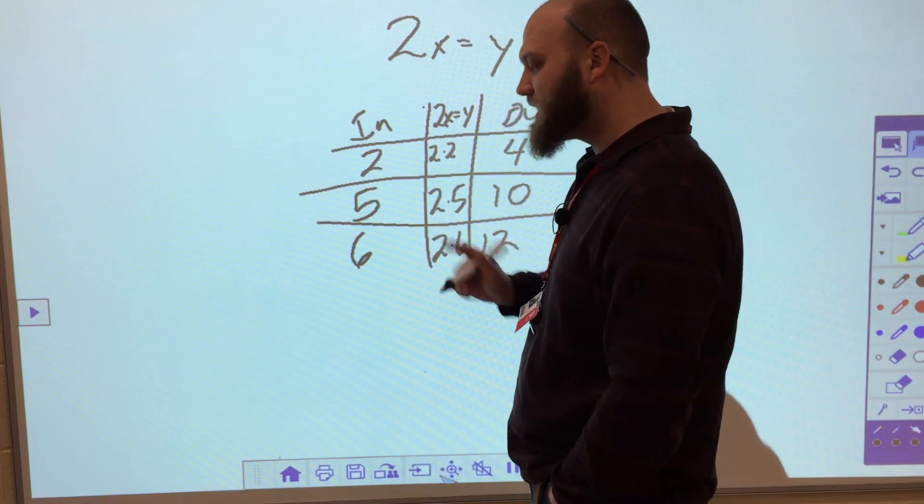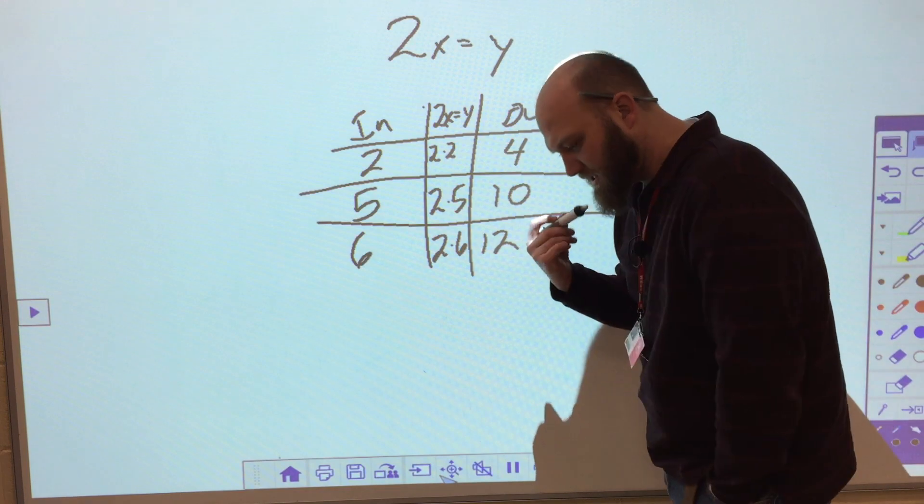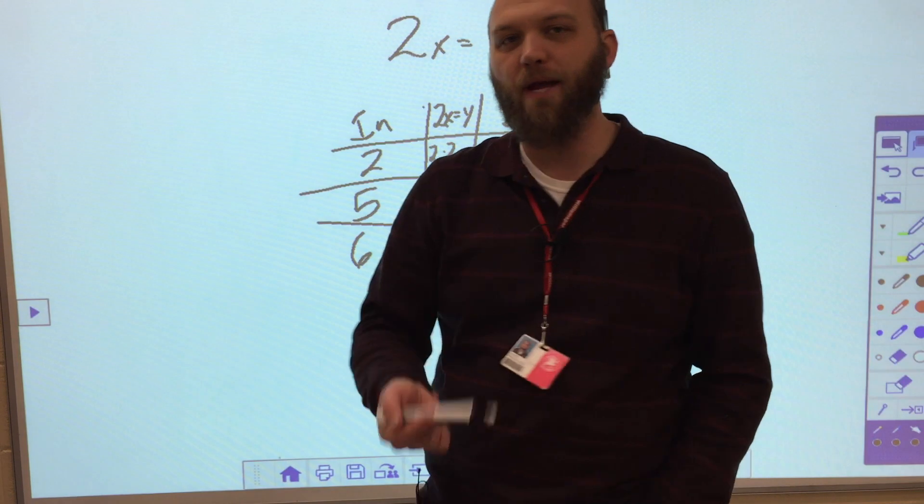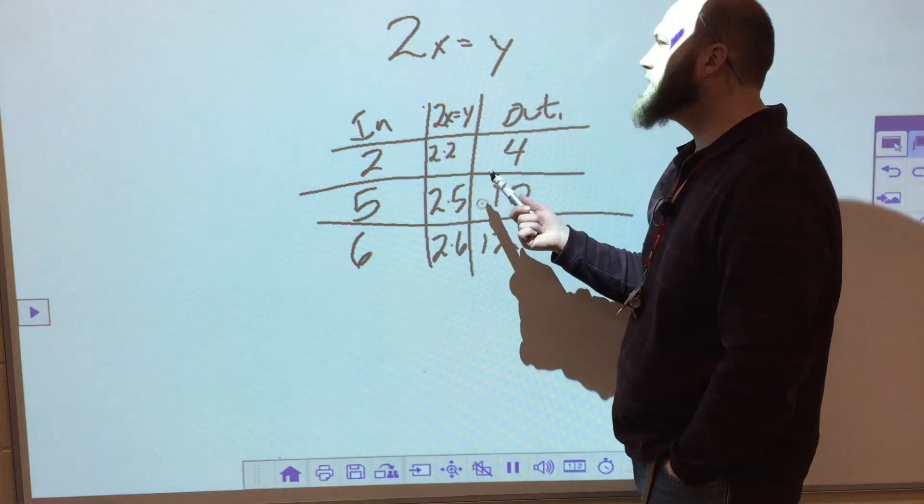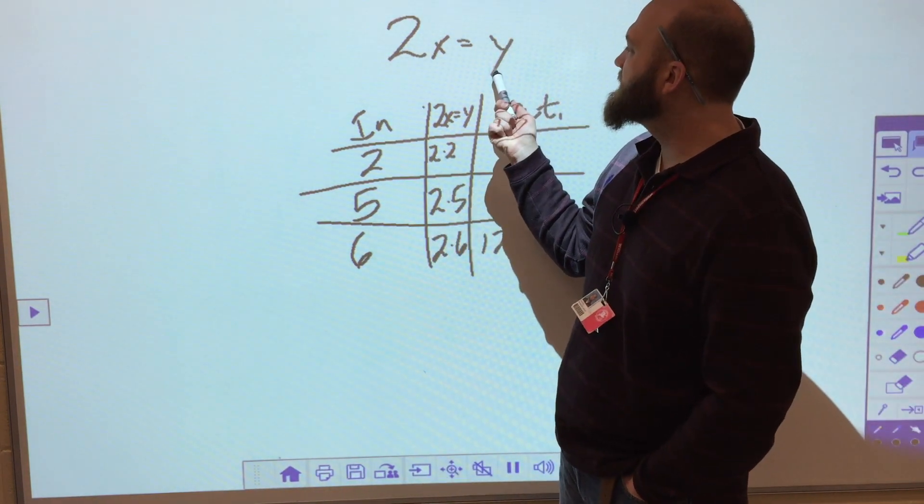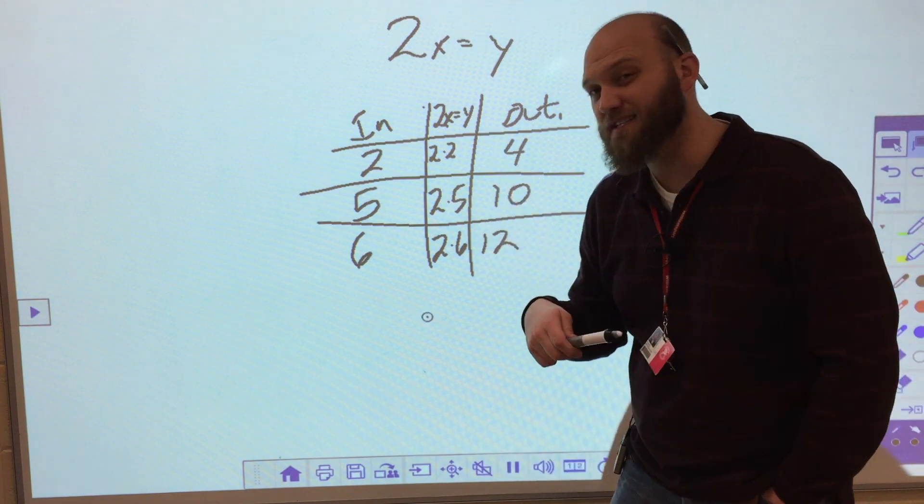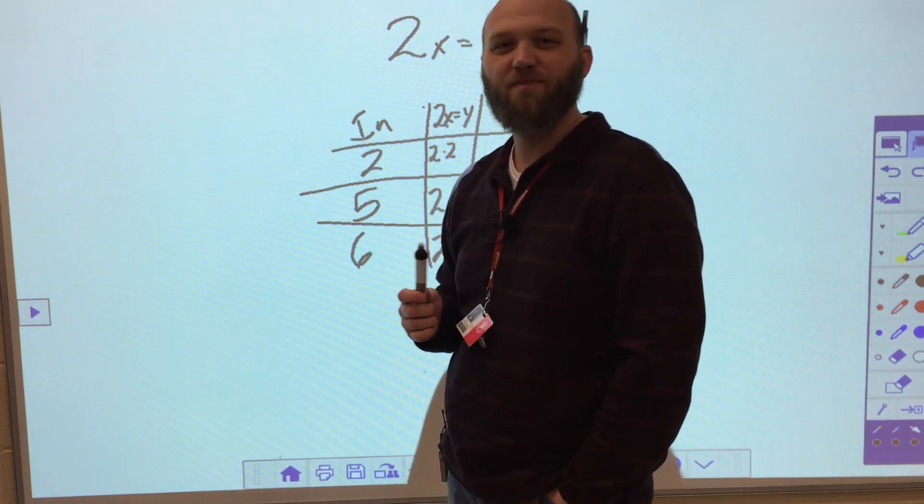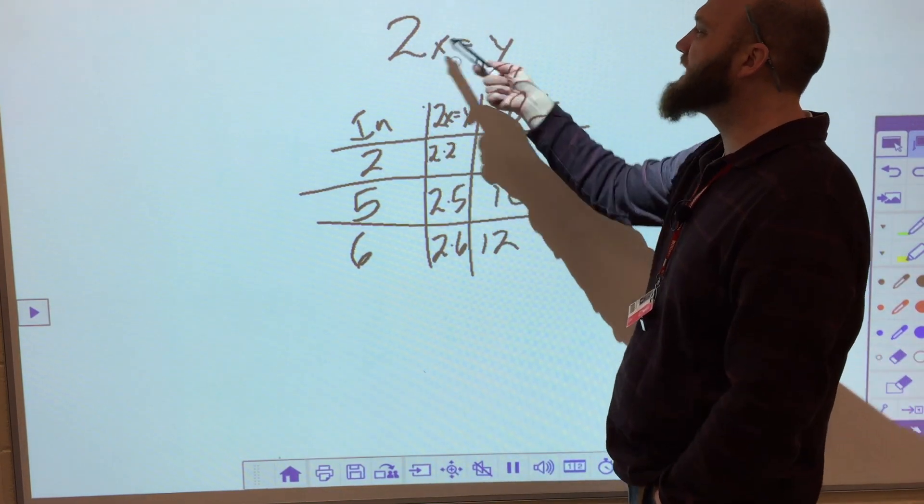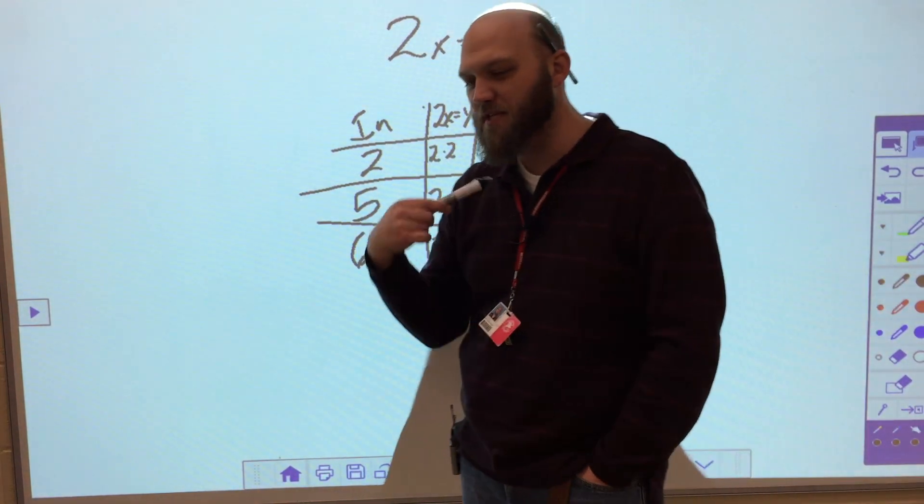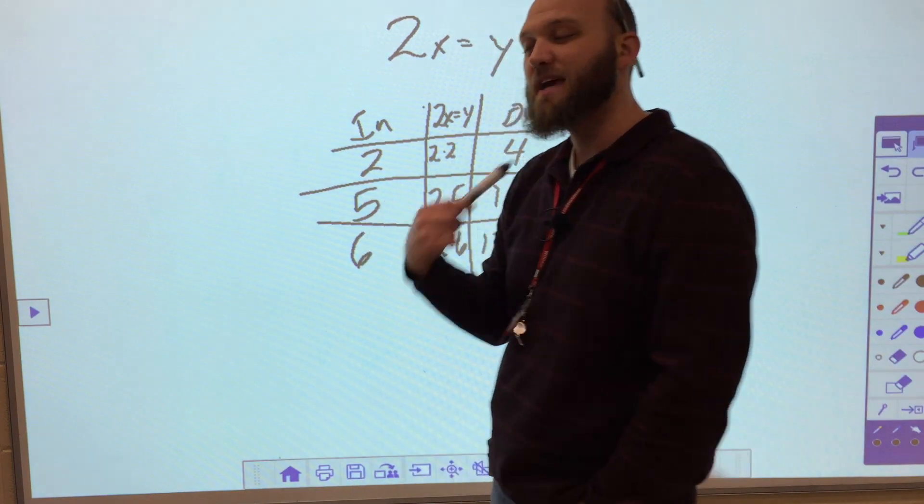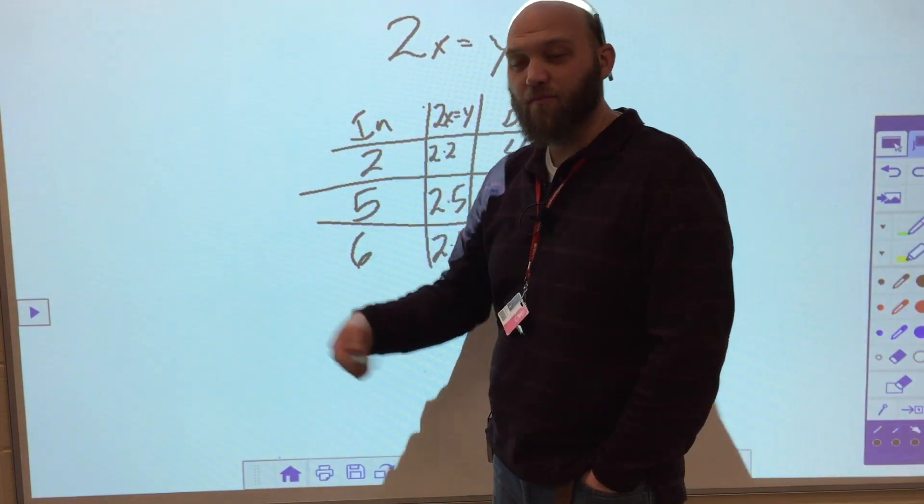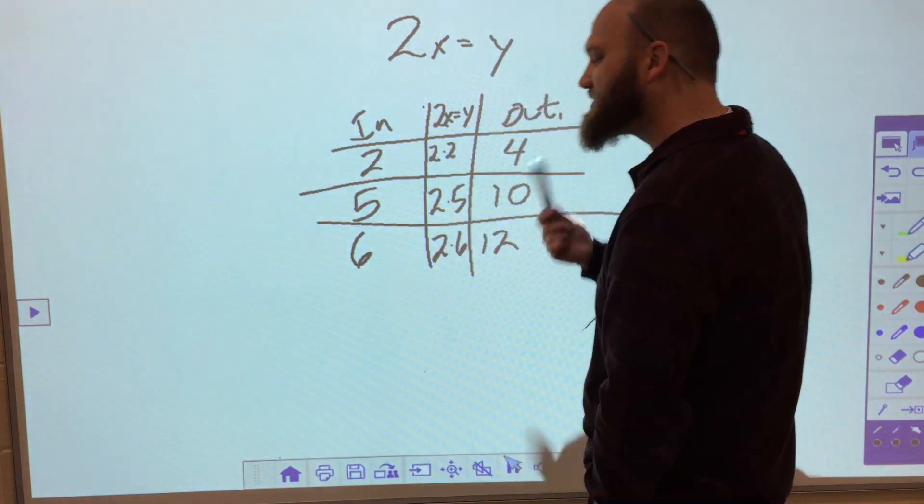So now I'd ask myself, let's say that Mr. Fosnot is going to do twice as many push-ups as Mr. W does. So I look at, this will be the number of push-ups that Mr. Fosnot does, and that's going to depend on how many push-ups Mr. W does. So 2x equals y. So x would be the independent variable, and this would be the number of push-ups that Mr. W does, and then y would be the dependent variable, and that would be the number of push-ups that Mr. Fosnot does.